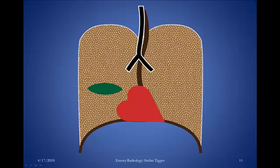Sometimes pleural effusions look kind of unusual. You can have pleural fluid that gets stuck in the minor fissure — this illustration shows what that might look like, with fluid in the position of the minor fissure. This has been called a pseudotumor, because when the patient's pleural effusion resolves, the soft tissue density will resolve as well.